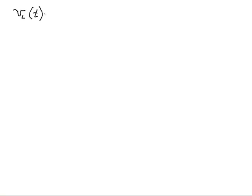You'll recall, hopefully, that the relationship between voltage and current in an inductor, just in general, is that the voltage across the inductor is a changing variable, and that's going to be equal to the inductance of the inductor times the rate of change of the current through the inductor over time.